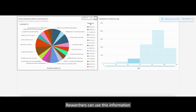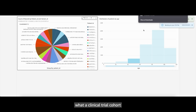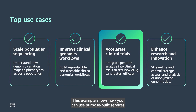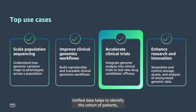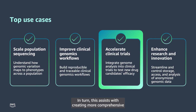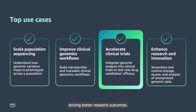Researchers can use this information to more accurately assess what a clinical trial cohort may entail from this population. This example shows how you can use purpose-built services like AWS Health Omics to unite different modalities of data. Unified data helps to identify the cohort of patients, such as those eligible for a clinical trial, based on specific genomic and demographic criteria. In turn, this assists with creating more comprehensive and inclusive clinical trials, driving better research outcomes.